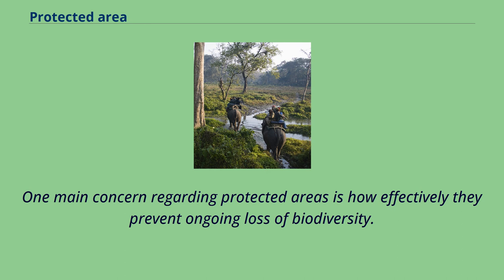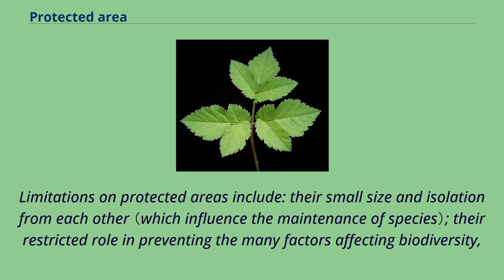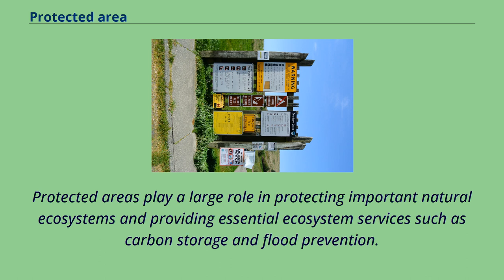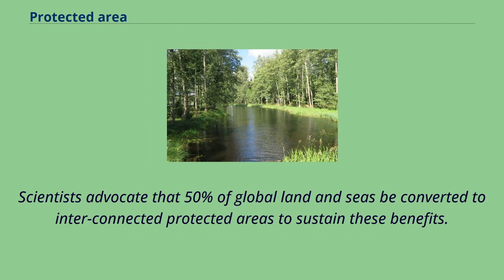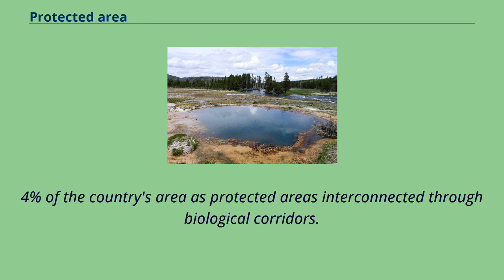One main concern regarding protected areas is how effectively they prevent ongoing loss of biodiversity. Multiple case studies point to positive effects on terrestrial and marine species, but the majority of protected areas are under-represented. Limitations include their small size and isolation from each other, their restricted role in preventing factors such as climate change, invasive species, and pollution, their high costs, and increasing conflict with human demands for nature's resources. Scientists advocate that 50% of global land and seas be converted to interconnected protected areas to sustain ecosystem services such as carbon storage and flood prevention.